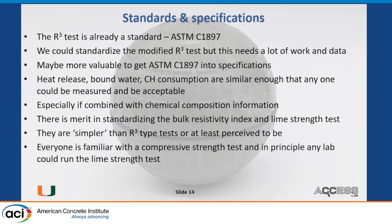Now, let's talk about standards and specifications. The R3 test is already a standard — it's ASTM C1897. We could standardize the modified R3 test, but I honestly think it's a lot of work and data is needed. Personally, I'm not sure that's where I'd put my effort. It might be much more valuable to get ASTM C1897 into specifications — I know ASTM is seriously working on that. We have numbers: plenty of data suggests that 50 or 100 joules per gram of heat could be a great first step.